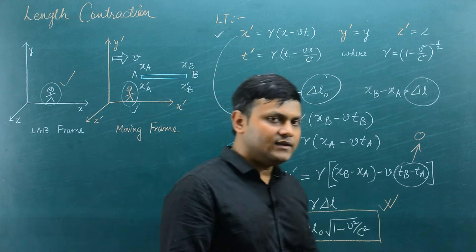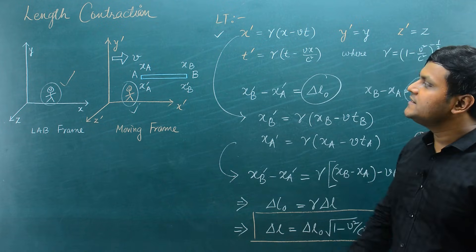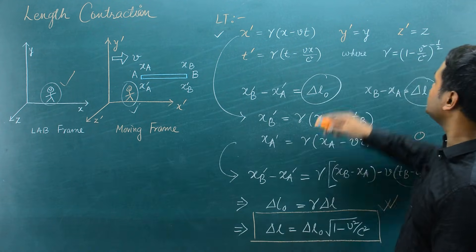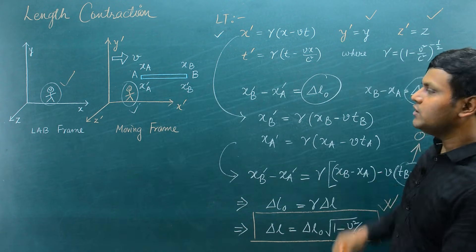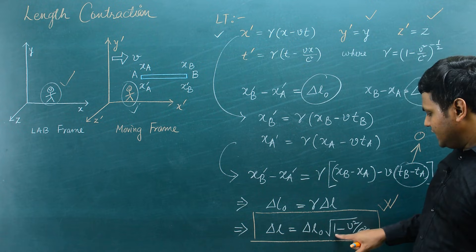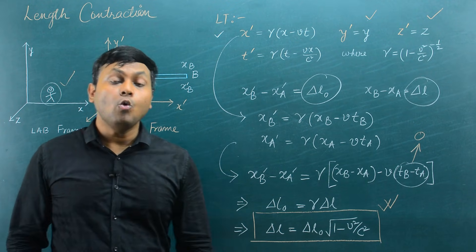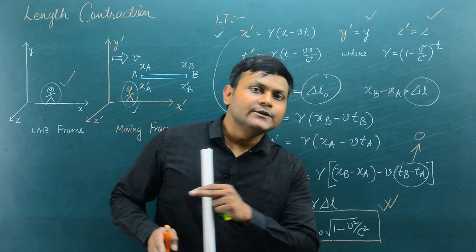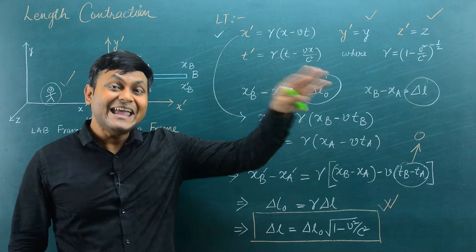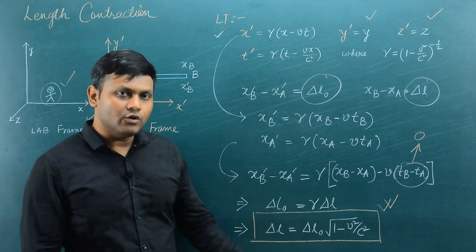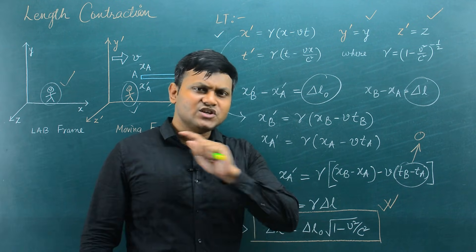A few things need to be made clear. First, this length contraction only happens in the direction of relative motion — it does not happen perpendicular to the direction of relative motion, because y' = y and z' = z. Second, the gamma factor becomes significant only at very, very high velocities — velocities comparable to the speed of light, like 10% or 50% of the speed of light. This is the reason why we do not see length contraction in usual day-to-day events — we only see it at very peculiar events where such velocities are achieved.